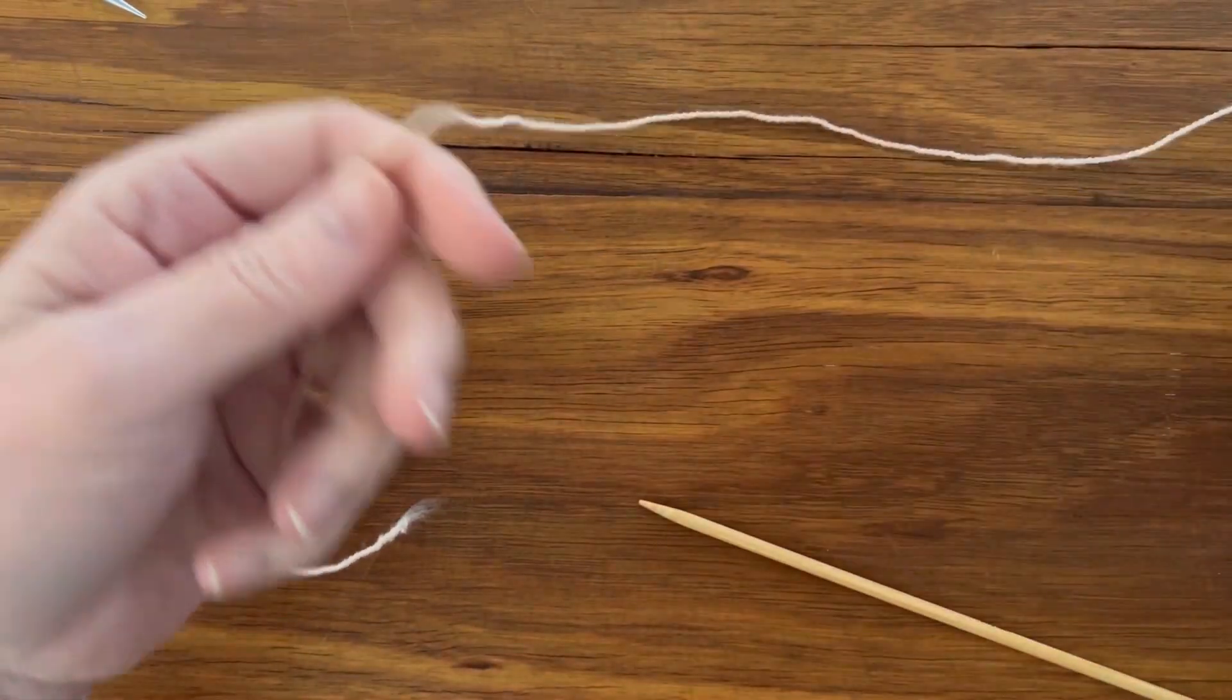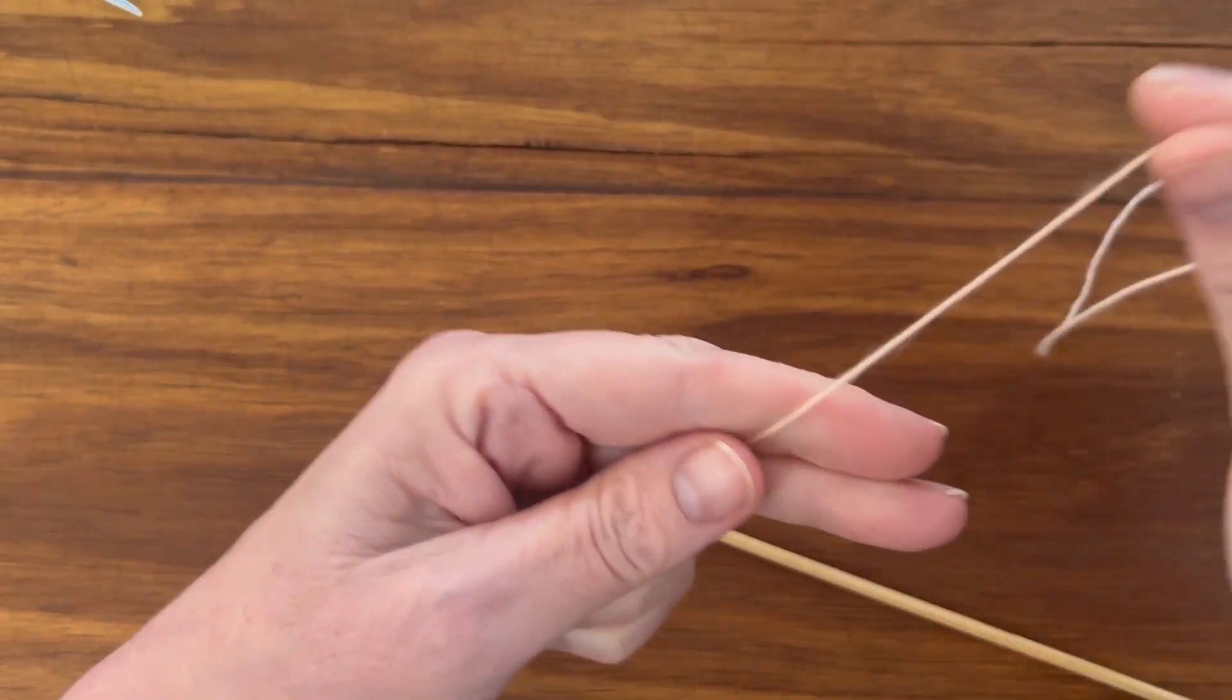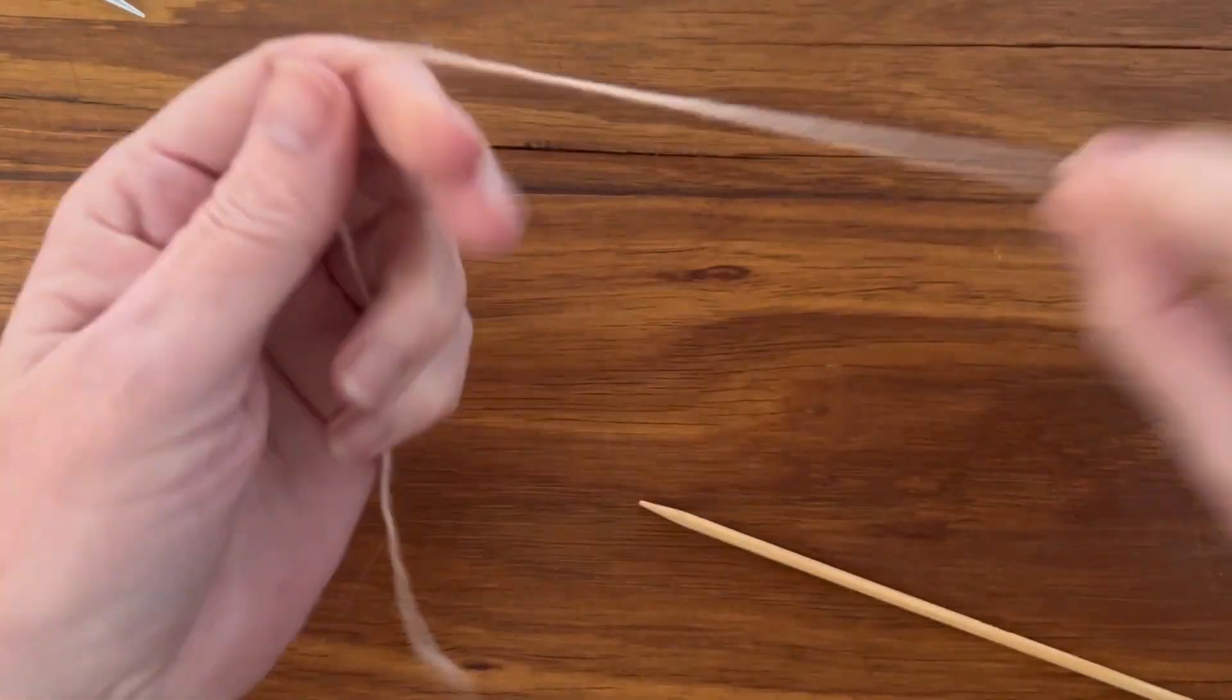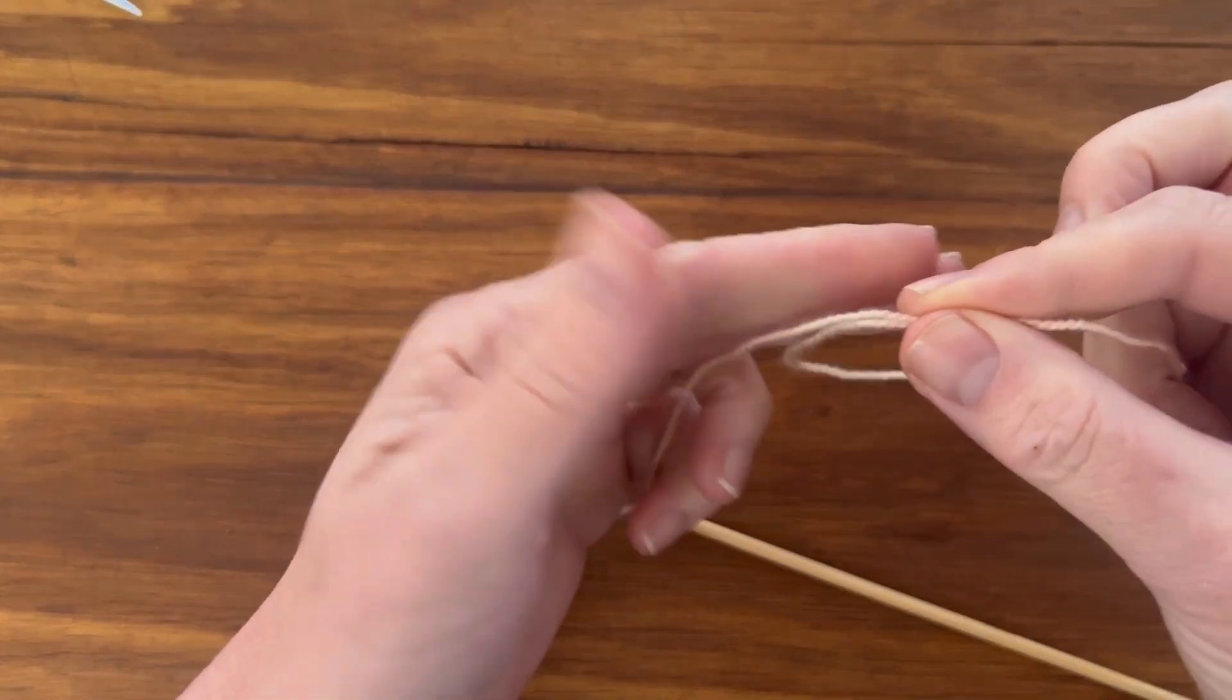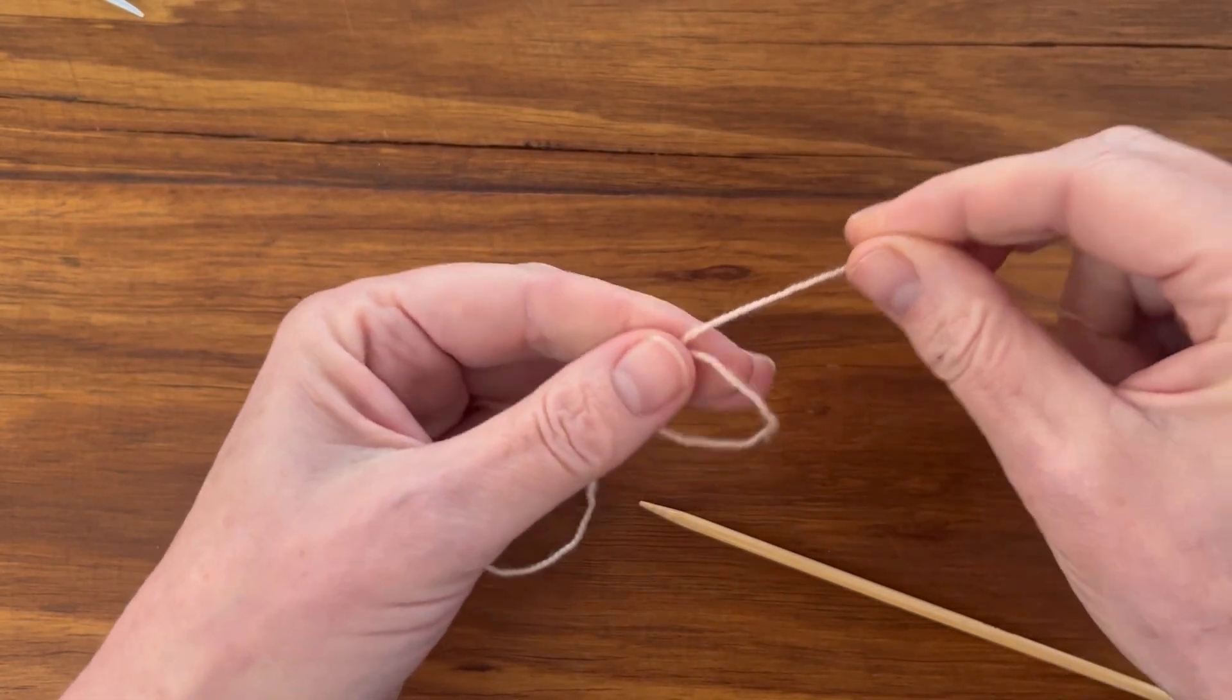So have the working yarn over to your right side and the tail onto your left. Loop the yarn. Form a loop and just hold that in place with your thumb.